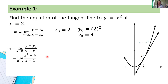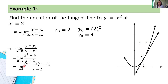As mentioned in the previous video tutorial, in such cases we can use factoring or rationalization. In this case, we can do factoring. The expression x² minus 4 can be factored as (x + 2)(x minus 2).